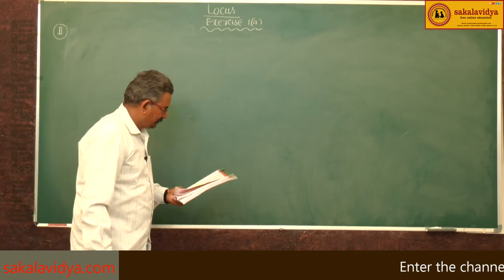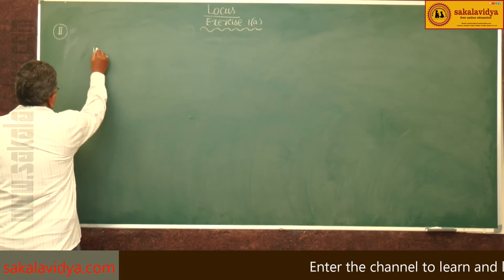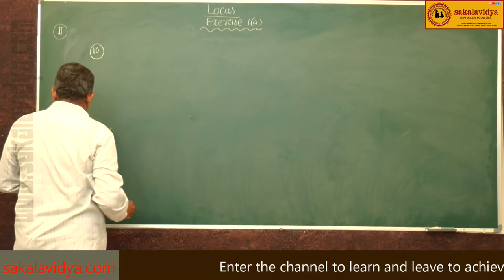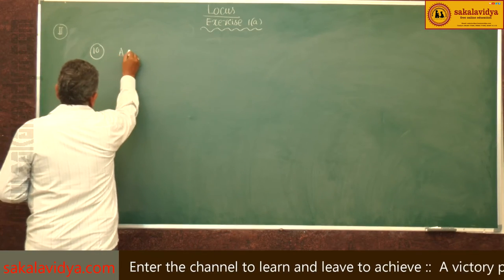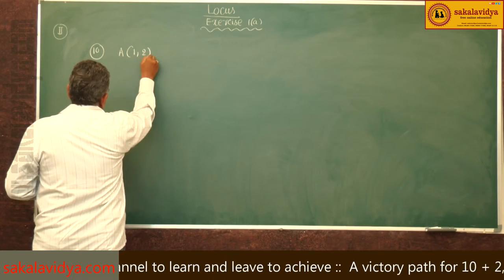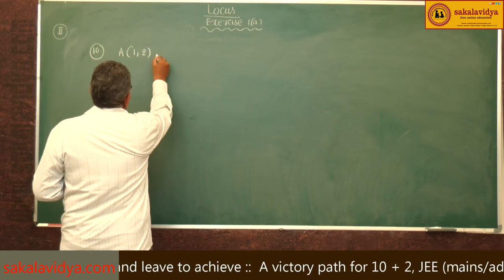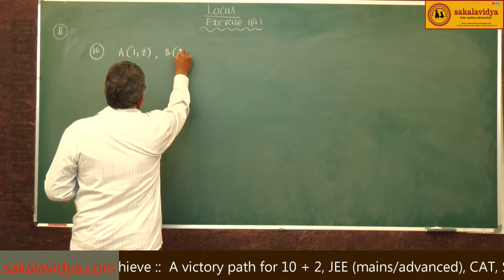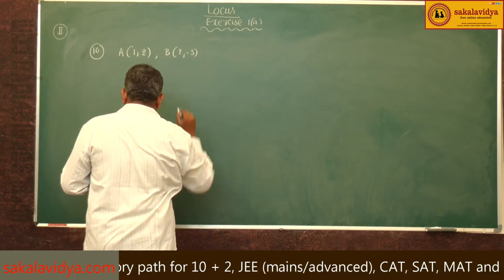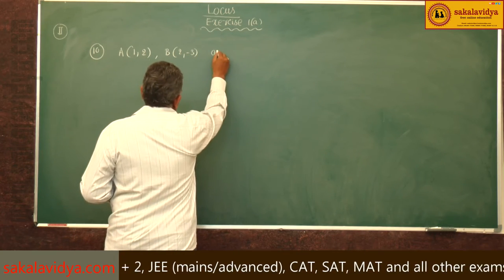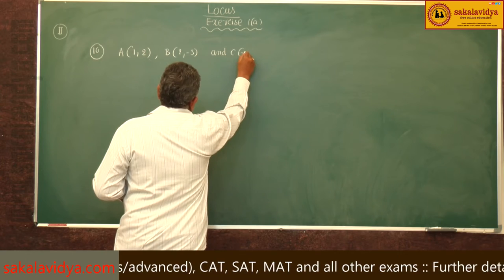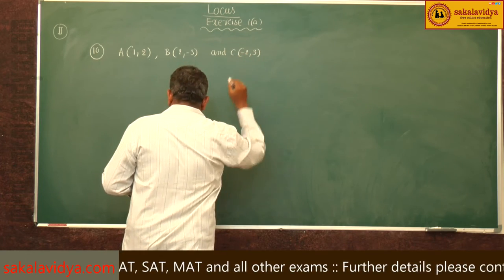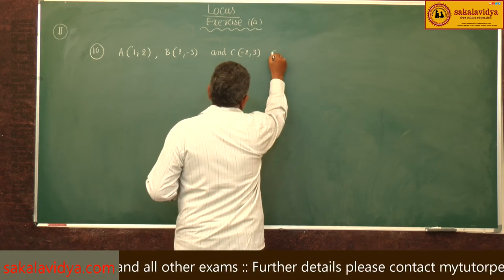10th question. A(1,2), B(2,-3), and C(-2,3) are three points.